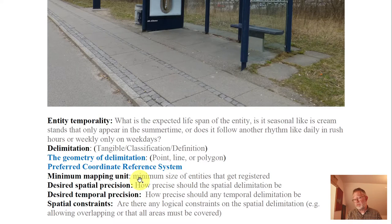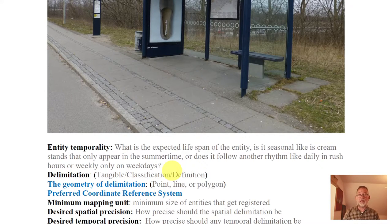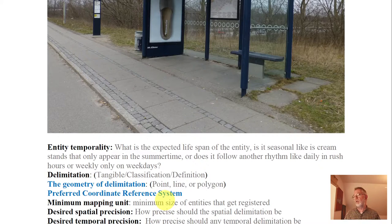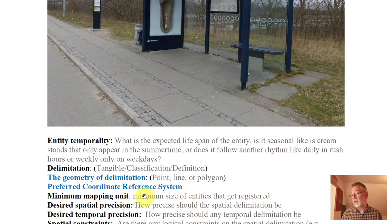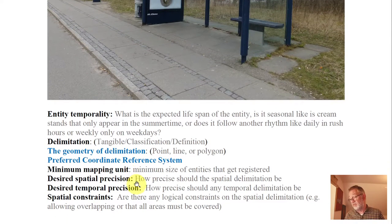We also have to specify a minimum mapping unit. For bus stops we would probably map all of them. But for something like habitats or buildings — how small is a building before it counts as a building? A dog house or a play house is probably too small to be classified as a building. Typically we have a lower limit to the size of things before they will be registered — that's the minimum mapping unit. Defining the minimum mapping unit is really important, especially when working with ecosystems and habitats.